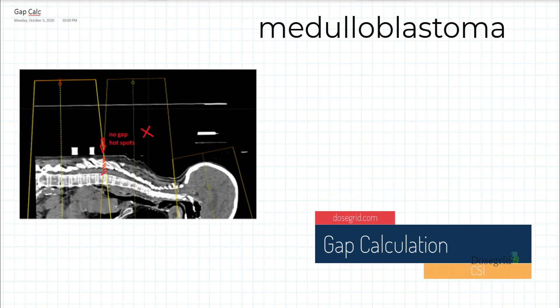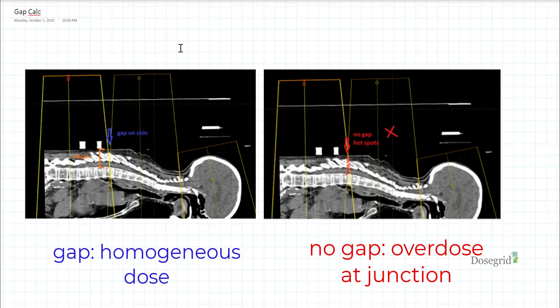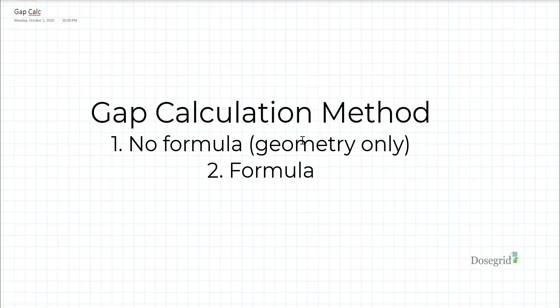In craniospinal irradiation, gaps are left in the skin between adjacent spine fields to prevent overdose at the surface. Today, we'll learn how to solve a gap calculation, one method using a formula and the other without.